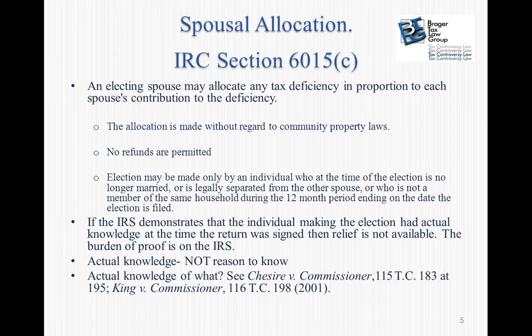You may have to wait to file your request for relief under Section 6015(c). The one thing that will get a person knocked out of the spousal allocation rules is if the IRS can show that the requesting spouse had actual knowledge at the time the return was signed of the deficiency. In that situation, relief is not available. The burden of proof is on the IRS to demonstrate actual knowledge — not simply reason to know, but actual knowledge.